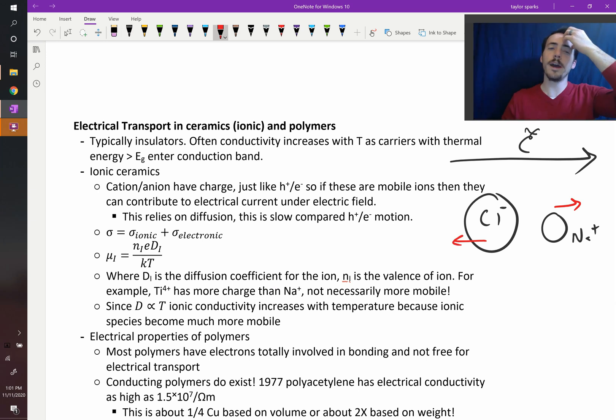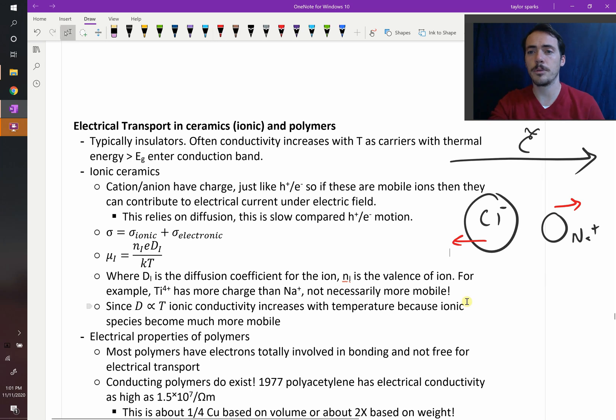So if you had a ceramic material that allowed for ions to move, and you have to get both moving otherwise you're going to get problems of charge neutrality, then you could get significant electrical conductivity by the ions themselves moving, which is pretty cool.